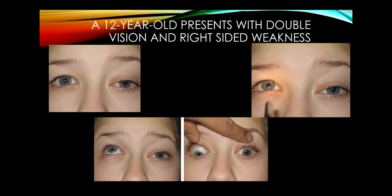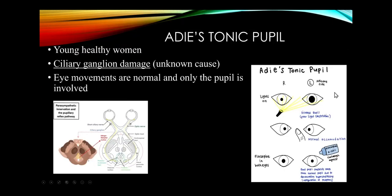A partial third nerve palsy presents with ptosis and a dilated pupil. Because third nerve function is lost, the patient can't look up or down well. When light is shone into the affected eye, there is no consensual response in the affected pupil — for example, a left third nerve palsy.